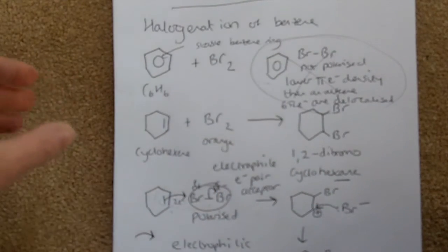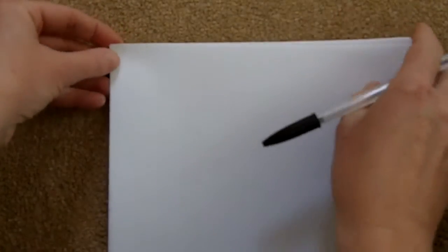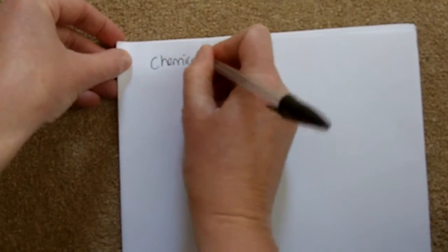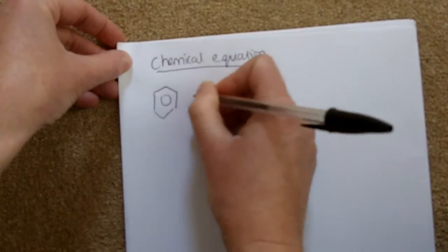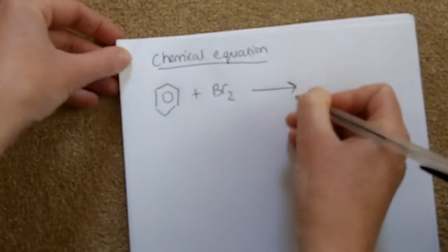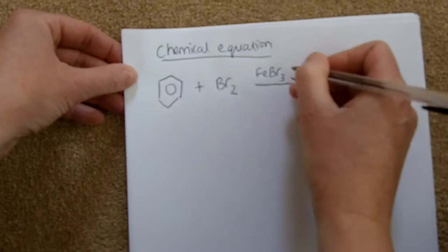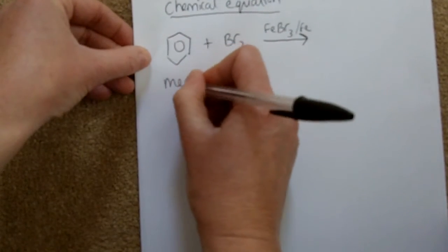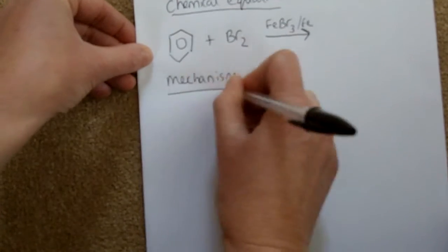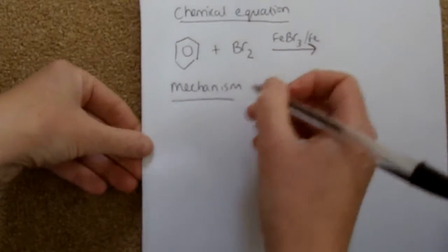Benzene can react with bromine, but you need a catalyst. Let's do the chemical equation first. Benzene plus bromine — note it's not bromine water — requires a catalyst, usually FeBr₃, although Fe on its own can also be used. We'll do the equation and the mechanism showing the movement of electron pairs at the same time.